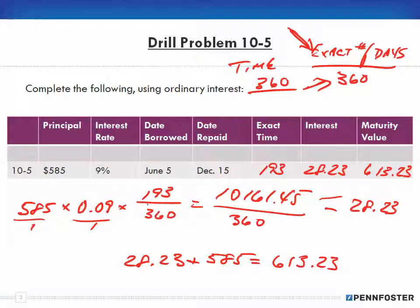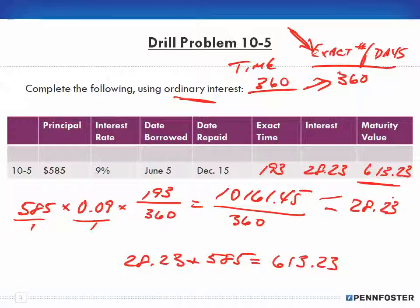As you can see, it's basically the same process as problems 10-1 and 10-3: principal times rate times time, where in this case we calculated exact days over 360 for ordinary interest. I calculated the interest, added it to the principal, and got my maturity value. I'm going to stop here and pick up with drill problem 10-7 in the next video.